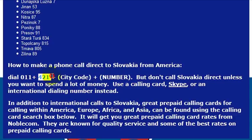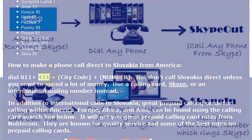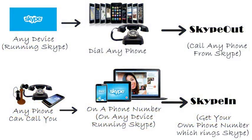So again, the country code for Slovakia is 421. But I wouldn't really recommend calling direct — your phone company will charge you a lot of money.